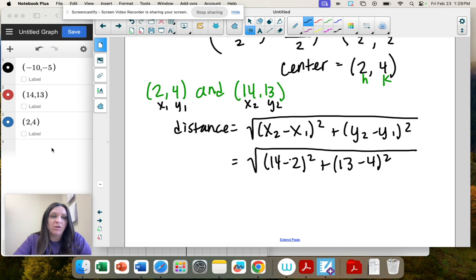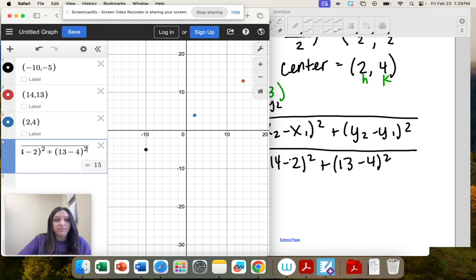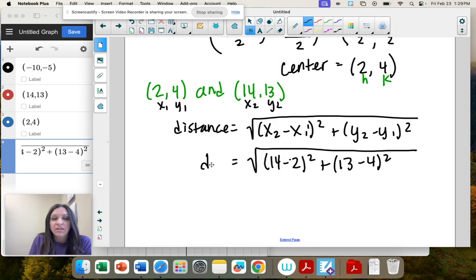And from here, I'm just going to put the whole thing in the calculator. So square root of 14 minus 2 squared plus 13 minus 4 squared. So the distance between those two points is 15, and that's actually, that's our radius. That's what we just found. Our radius is 15.